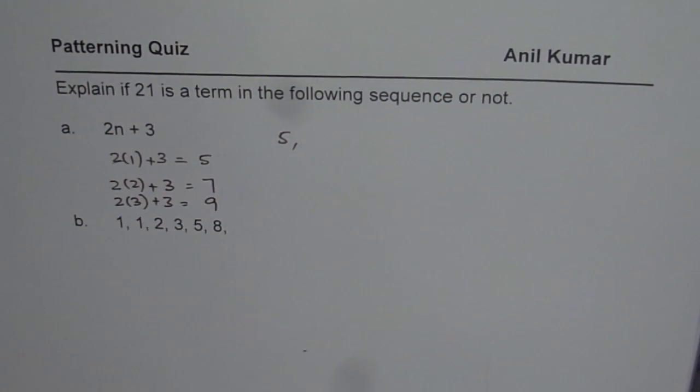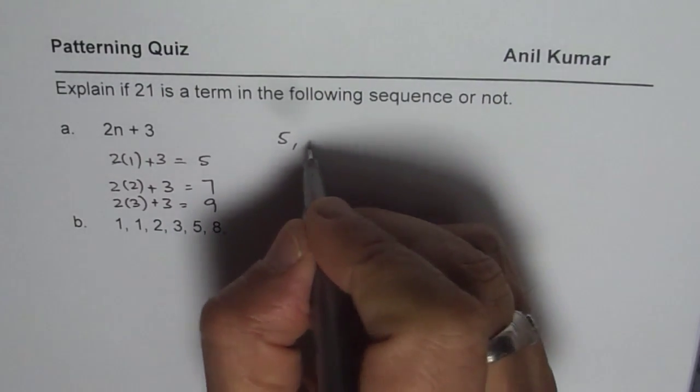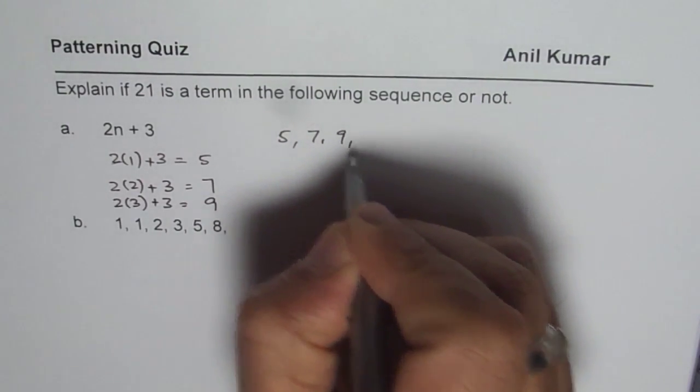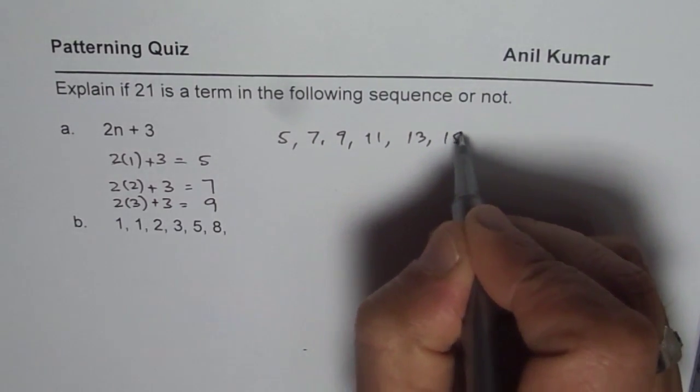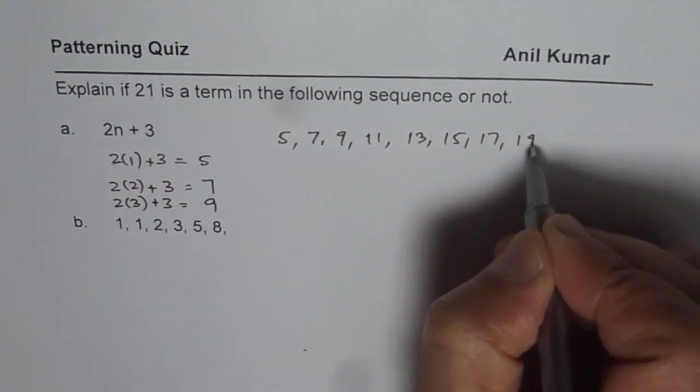So that is how the pattern is. So you get numbers like 5, 7, 9, and then you can continue the pattern. 11, 13, 15, 17, 19, 21.